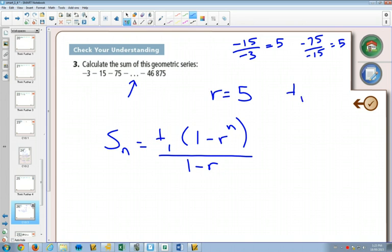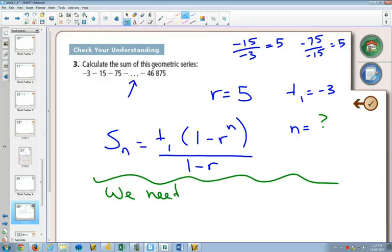Do we know term one? Yes. Term one is negative three. Do we know how many terms there are? No. So before we can use this formula, we realize that we don't know n. So we need to find n first.